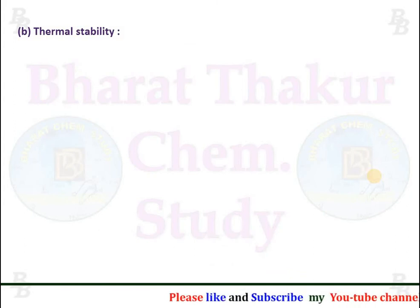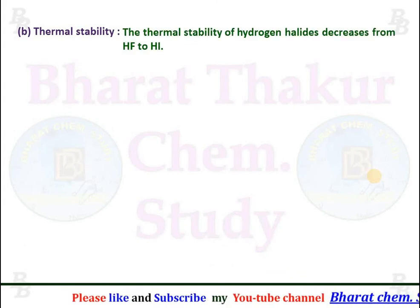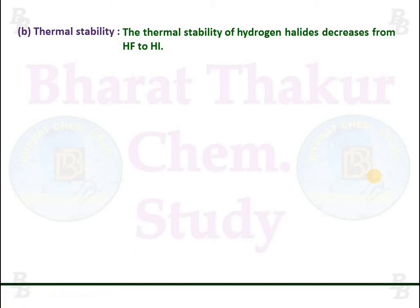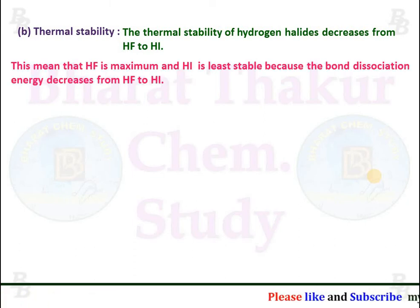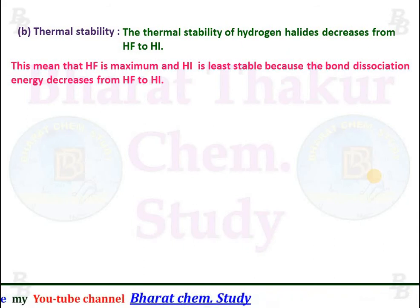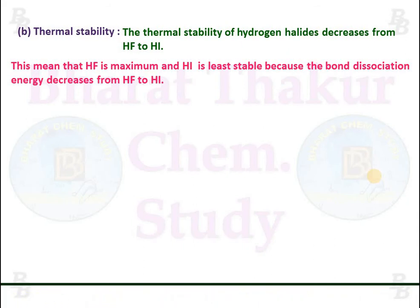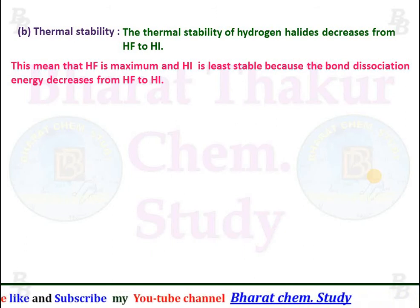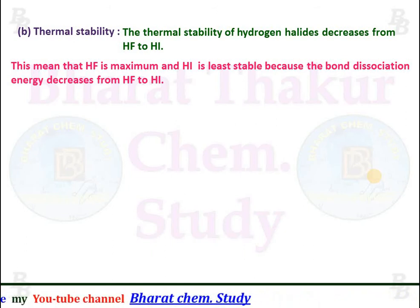Thermal stability: the thermal stability of hydrogen halides decreases from HF to HI. This means that HF is maximally thermally stable while HI is least thermally stable, because the bond dissociation energy decreases from HF to HI.